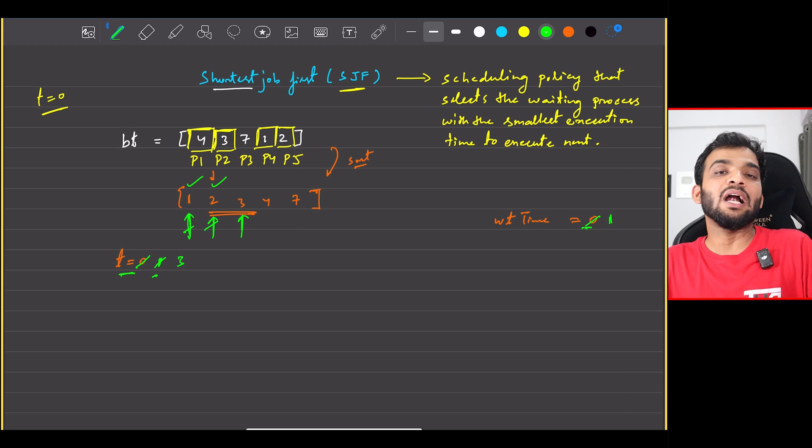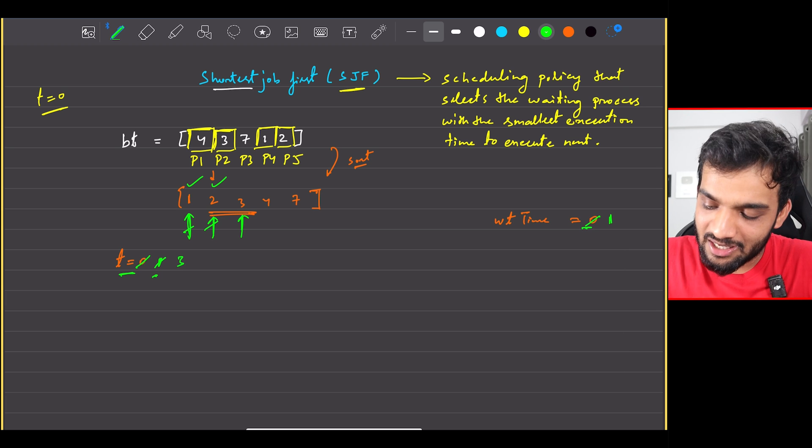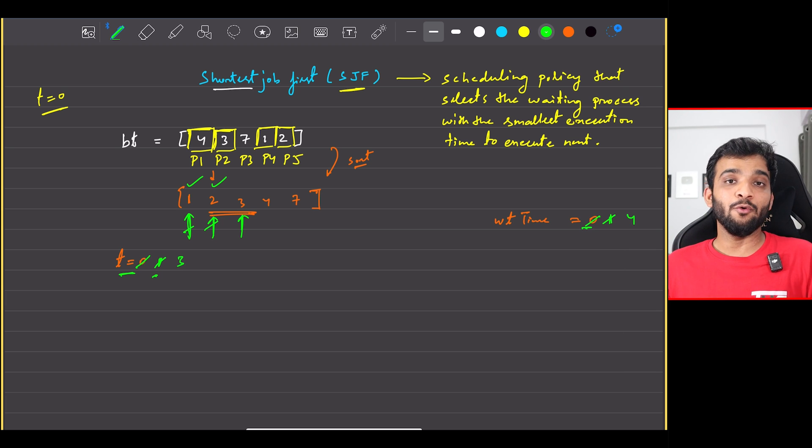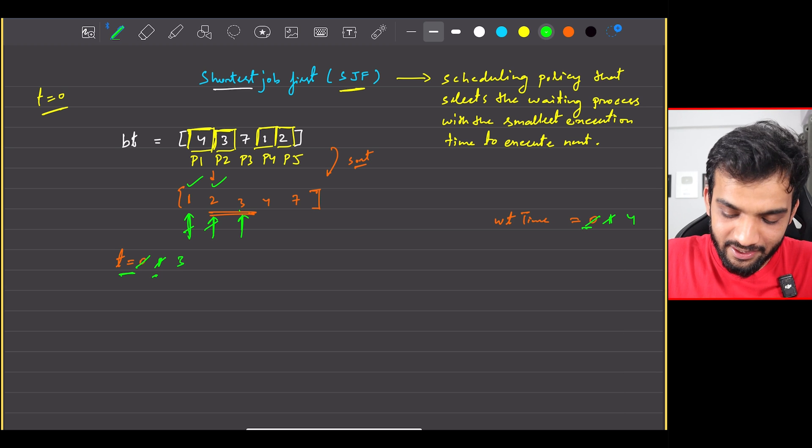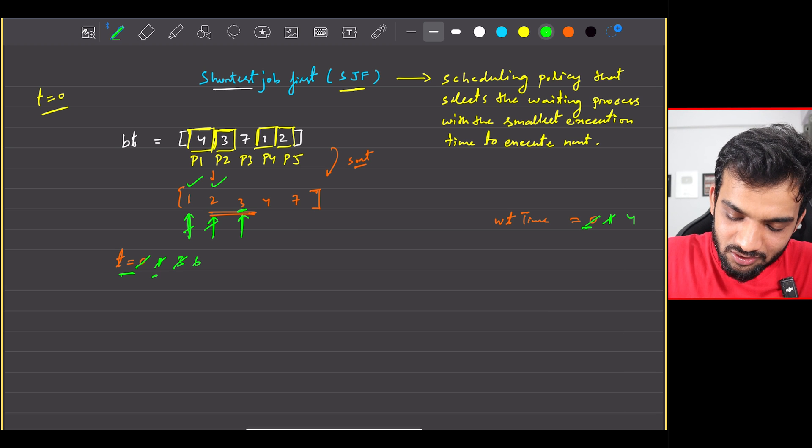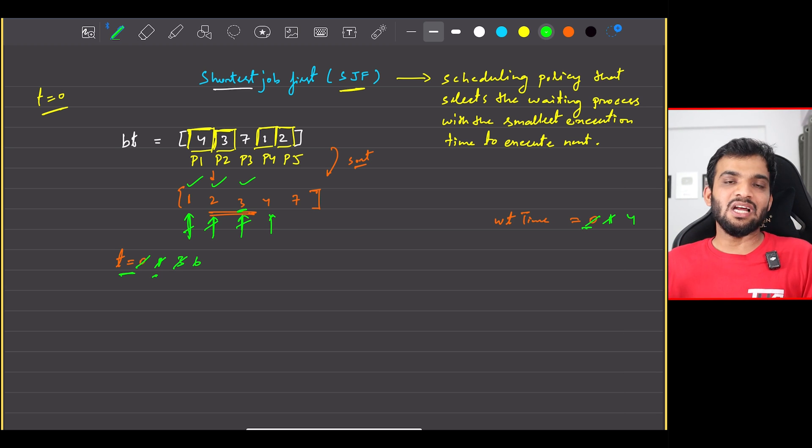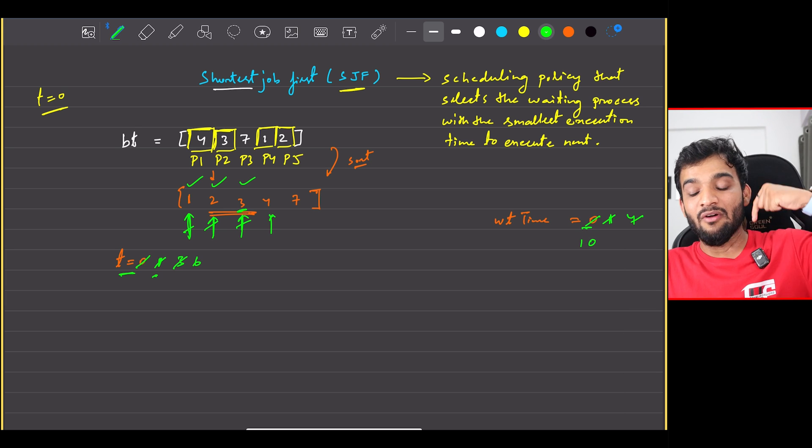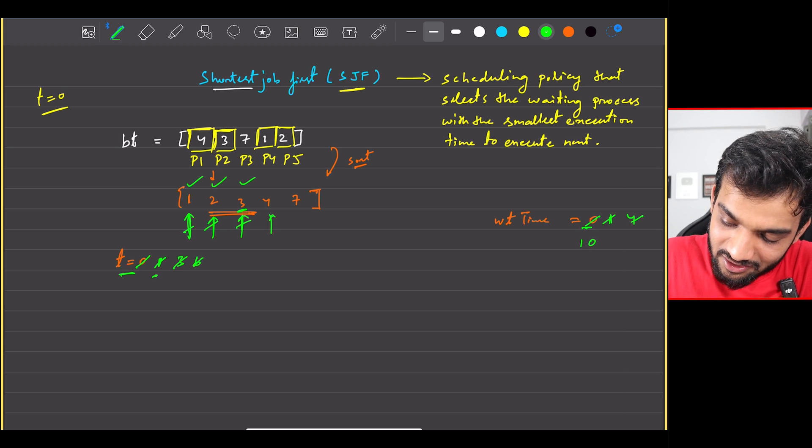We go to the next one. Next one is starting at 3. Starting at 3. So can I say the waiting time will be 3 plus 1? The total waiting time will be 4. Perfect. When does it end? 6. So this is done.